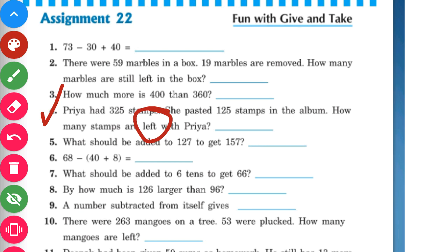Since this is a word problem, we write a statement: total number of stamps equals 325, number of stamps pasted in the album equals 125. Number of stamps left with Priya equals 325 minus 125. Let us do the calculation.